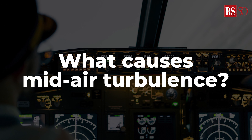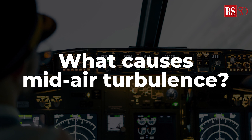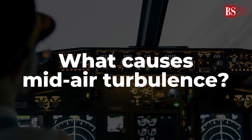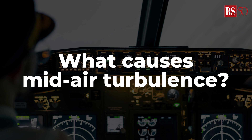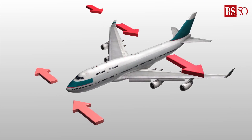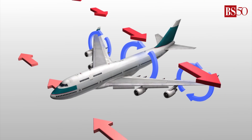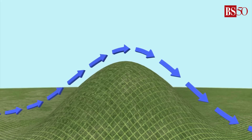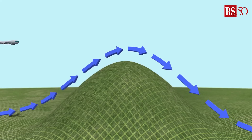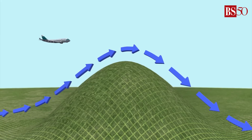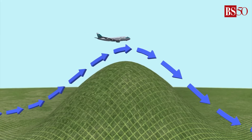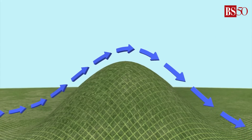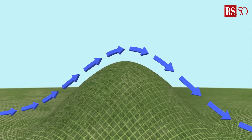Turbulence, like choppy sea waves, is caused by thermal, mechanical, and shear forces in the air. In the case of a thermal source, turbulence stems from warm air rising through cooler air. When the source is mechanical, airflow disrupted by mountains or man-made structures triggers the turbulence.